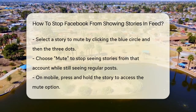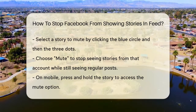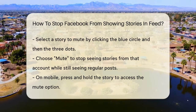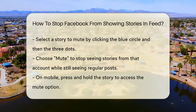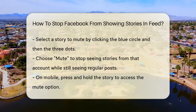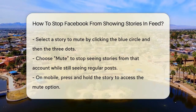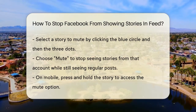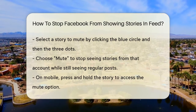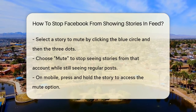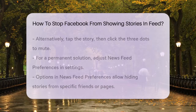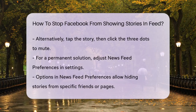On your mobile device, it's just as easy. Open the Facebook app, go to the top of your feed where the stories are displayed, and press and hold on the story you want to mute. A pop-up will appear with the option to mute the stories from that account. Alternatively, you can tap the story to view it, then press the three dots in the upper right corner and select 'Mute.'